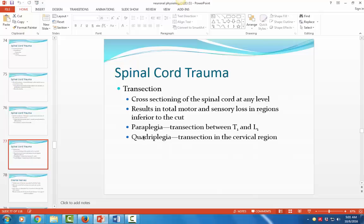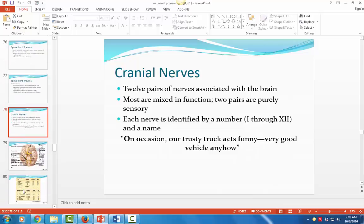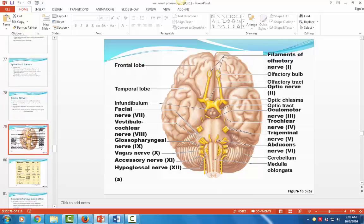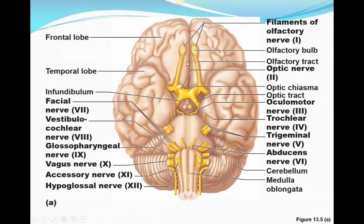We talked about cranial nerves in lab. The key thing to remember is that they are part of the peripheral nervous system — made up of myelinated axons outside the central nervous system, extending away from the brain. Just because they're on the brain doesn't mean they are part of the brain. Myelinated axons in the brain and spinal cord we call a tract; myelinated axons outside are called a nerve. There are 12 pairs of cranial nerves and 31 pairs of spinal nerves, all part of the peripheral nervous system, carrying sensory and motor information.